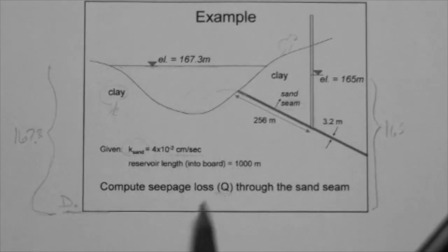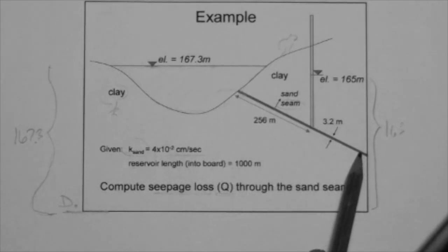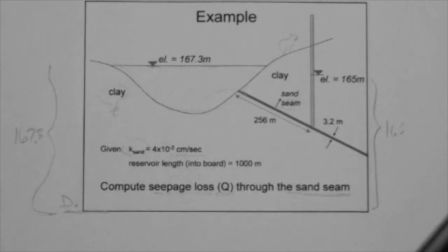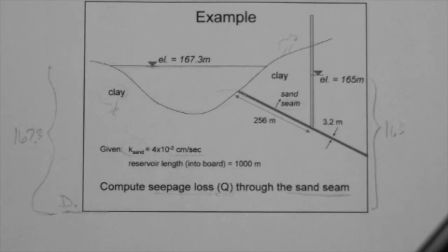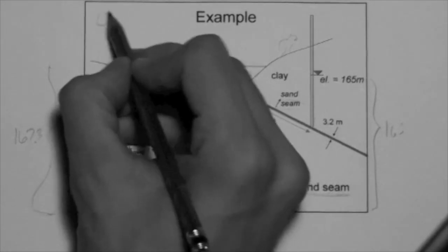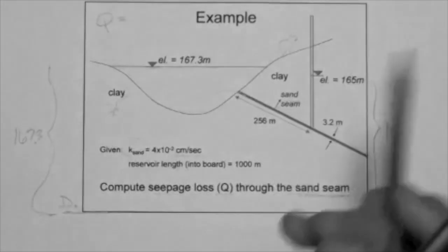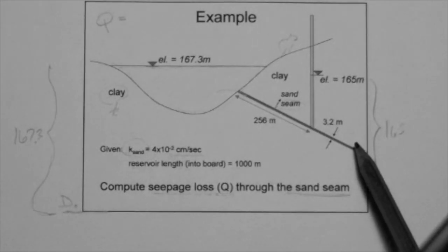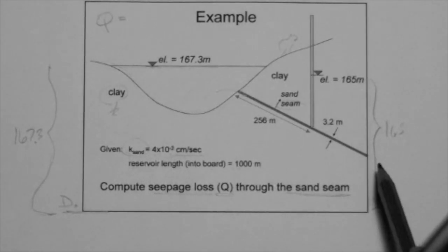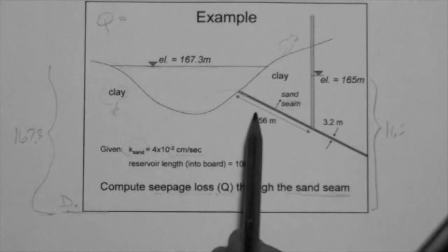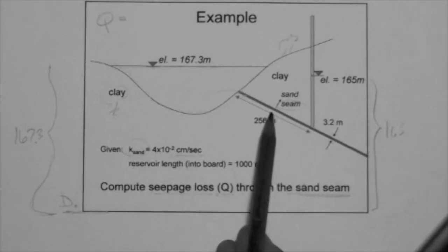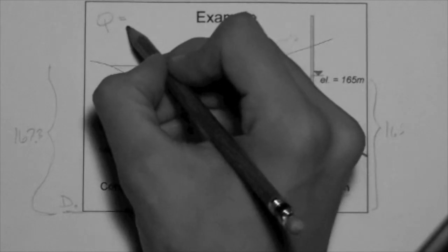Compute Q, the seepage loss, that is the flow rate, the amount of water loss per unit time through the seam. Now, what do we have here? We have a situation where we need to calculate Q. This is a 1D flow problem because the water only flows in one direction. It doesn't flow up and then down and then up again. It just flows in one direction through the seam. So we can use Darcy's law.